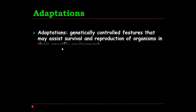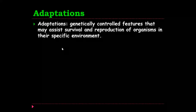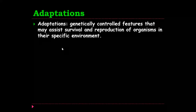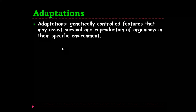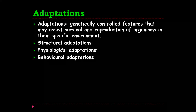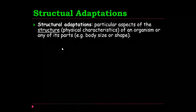So, adaptations — this is the definition if asked: genetically controlled features that may assist survival and reproduction of organisms in their specific environment. An adaptation doesn't just occur — I can't just wake up tomorrow and decide to adapt a structure on my body. This is a genetically controlled thing which occurs over many generations. Structural adaptations, physiological adaptations, and behavioural adaptations — those are the three types we're going to look at in a bit more detail right now.